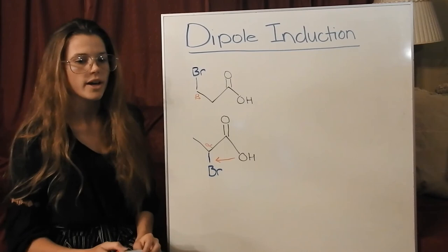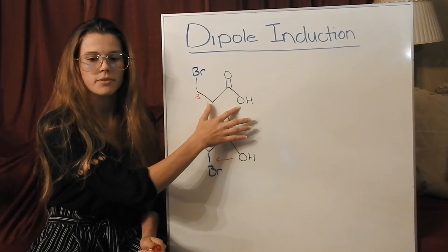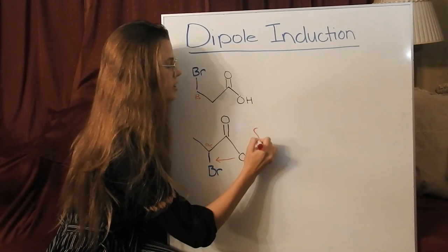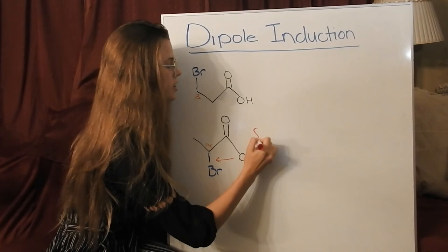On the other molecule, the bromine is on the beta carbon, which is farther away and has less of an effect on pulling that negative charge. The closer an atom is to the one holding the charge, the more influence it will have, making the hold of the charge more stable. These are found on alpha carbons, which are one carbon away from the one holding the charge. The farther away the electronegative atom is, the less it will be able to influence, making it less stable. So the alpha carbon compound will be a stronger acid, and the beta carbon compound will be weaker.